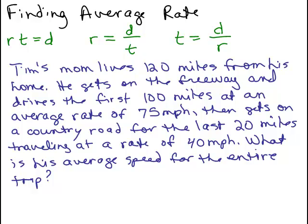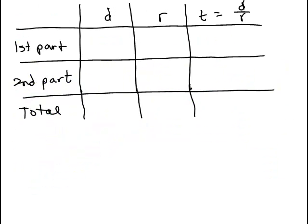All right, so we could put this information in a chart if we want. There's a first part of the trip and a second part of the trip and there's a distance and a rate given for both of those. And so, what was given is that there was 120 miles total, that was the total.